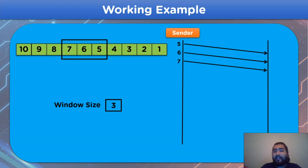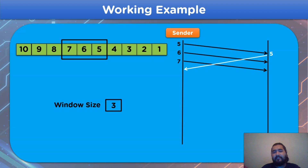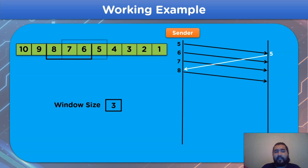Similarly, frame numbers 6 and 7, which were sent after frame 5, will also get discarded. According to the Go-Back-N ARQ protocol, we retransmit frame numbers 5, 6, and 7 from sender to receiver. After retransmission, frame number 5 gets acknowledged and we can share frame number 8, with the sliding window shifting from frames 5, 6, 7 to sequence numbers 6, 7, and 8.